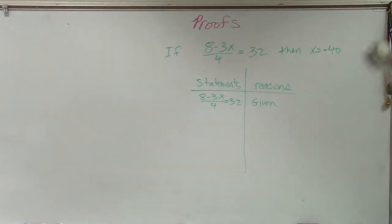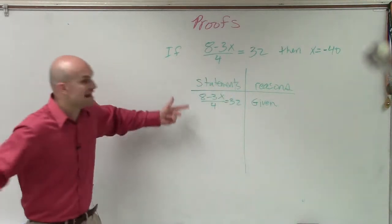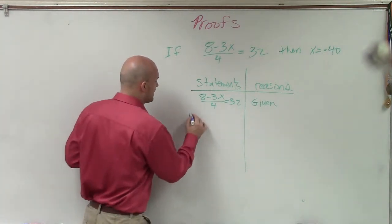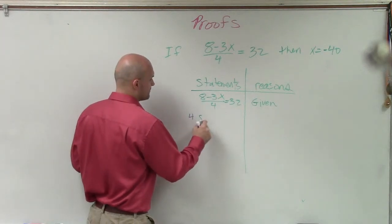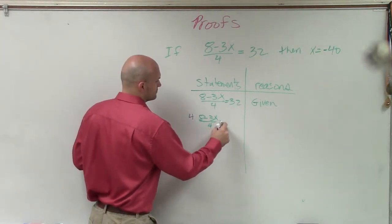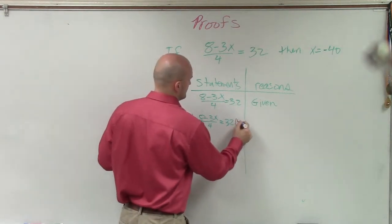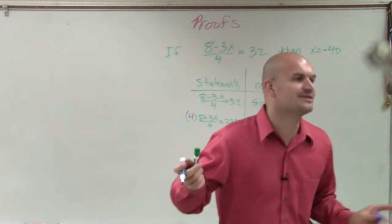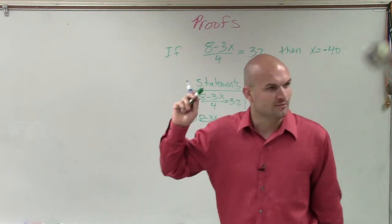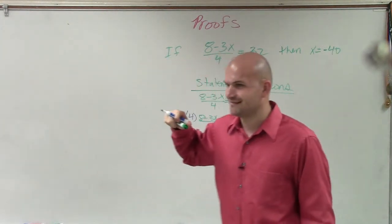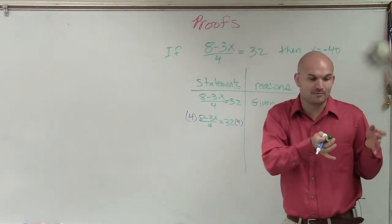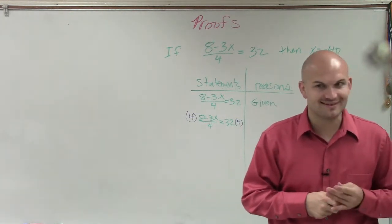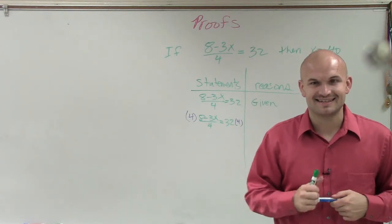So if I go ahead and multiply by 4 on both sides, because, ladies and gentlemen, what you have is you have an 8 minus 3x. All 8 minus 3x is being divided by 4. So we want to undo that. So what I'm going to do is I'm going to multiply both sides by 4. All right? Now, when we multiply something on both sides, does anybody remember what we call that property? When you multiply something on both sides, a distributive property, remember, would be when we had a number, and we're multiplying within, like parentheses, multiplication property of equality.